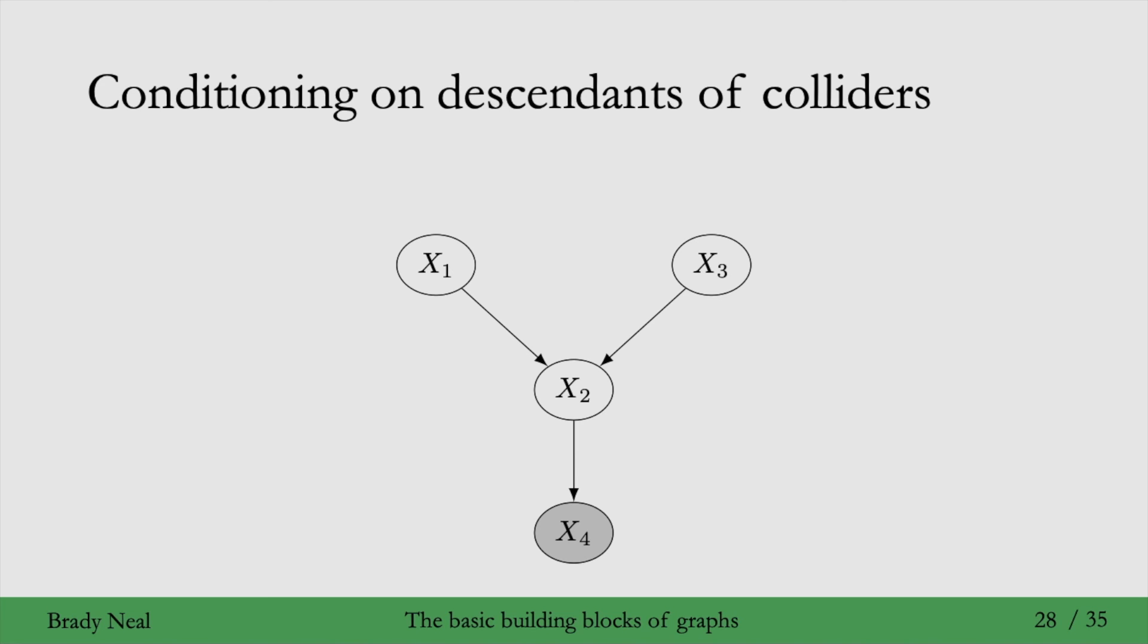Well, it turns out that that would also induce association between x1 and x3, if you condition on x4. The quick intuition for this is just that conditioning on x4 probably gives you information about x2, so it's a bit like a proxy for conditioning on x2, and we know that when we condition on x2, then that induces association between x1 and x3.